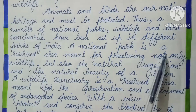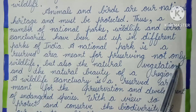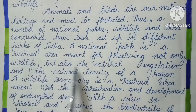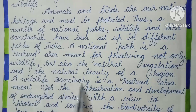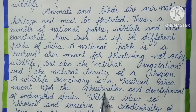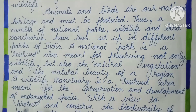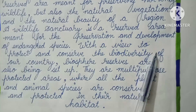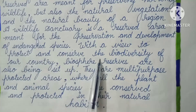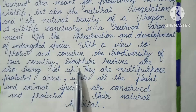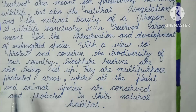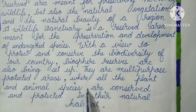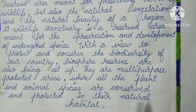A national park is a reserved area meant for preserving not only wildlife but also the natural vegetation and the natural beauty of the region. A wildlife sanctuary is a reserved area meant for the preservation and development of endangered species. With a view to protect and conserve the biodiversity of our country, biosphere reserves are also being set up. They are multi-purpose protected areas where all plant and animal species are conserved and protected in their natural habitat.